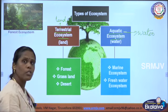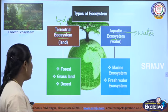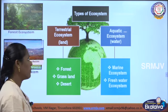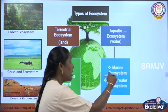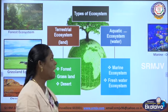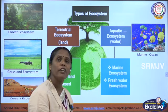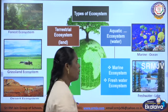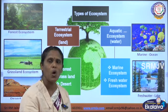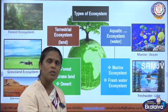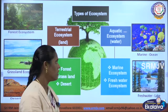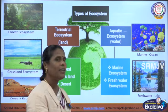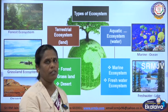The terrestrial ecosystem is further classified into three types: forest ecosystem, grassland ecosystem, and desert ecosystem. The aquatic ecosystem is further classified into marine ecosystem and freshwater ecosystem. Marine ecosystem refers to salt water, such as seas and oceans. Freshwater ecosystem refers to lakes and rivers.